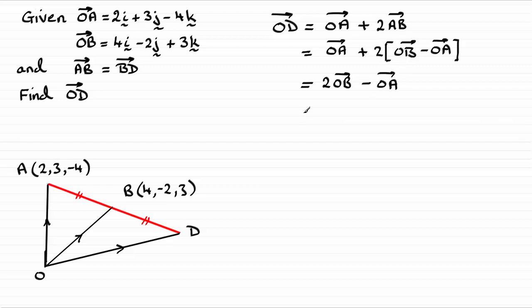And all I need to do now is just fill in our values. We've got two lots of O to B, and O to B, I'm going to write it as a column vector. This time is four minus two, three, so you've got four minus two, three. And we've got minus O to A, and O to A will be two, three minus four. Two, three minus four.